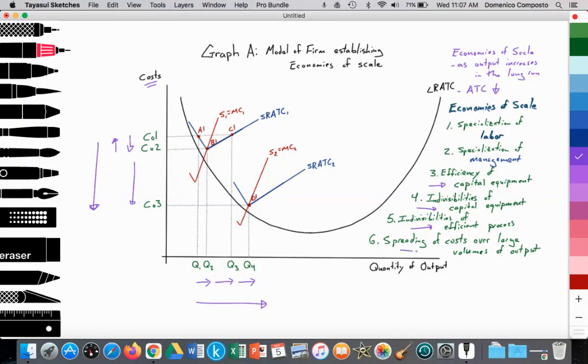We also get the idea of the spreading of costs over large volumes of output. Costs of certain activities, such as marketing and advertising, design, research, and development result in lower average total cost as the firm is able to increase output over time. We're dividing those costs by an increasing quantity of output, so the cost per unit of output falls. This is basically the idea behind economies of scale.